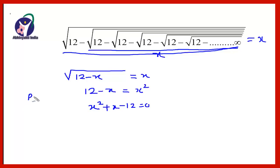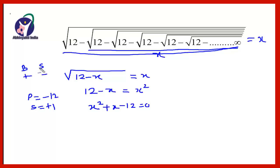Now we will solve this by splitting the middle term to find the value of x. We want a product of minus 12 and a sum of plus 1. Since we need a negative product, both numbers will have different signs. Since the middle term is plus, the bigger number will get the plus sign and the smaller number will get the minus sign. So we look for two numbers whose product is minus 12 — that can be 4 and 3, since 4 threes are 12.